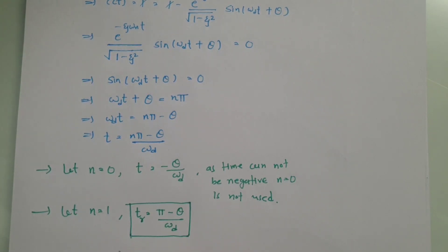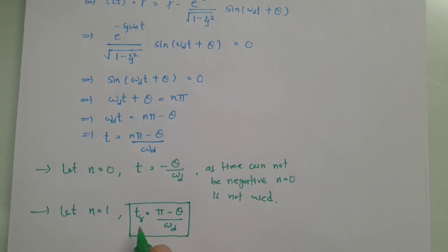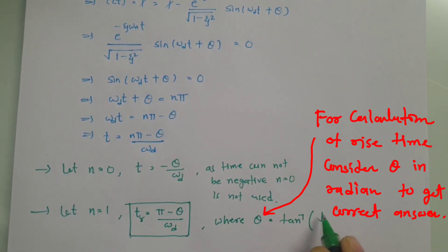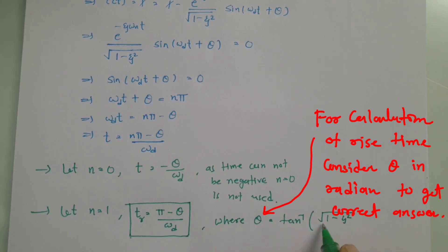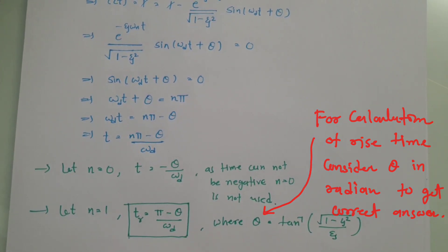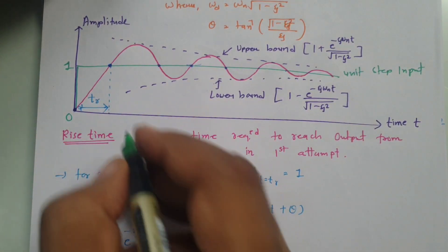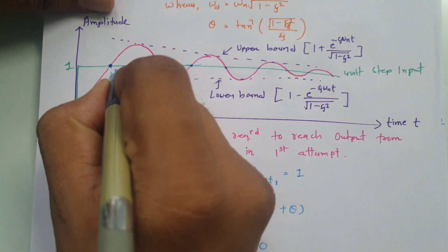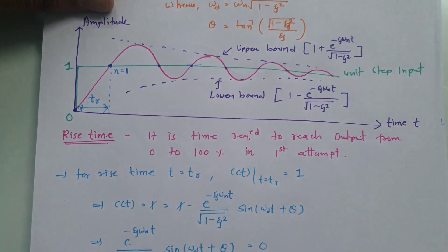This is the rise time because it is the minimum time required for the output to reach from 0 to 100 percent. The rise time is t_r = (π − θ) / ω_d, where θ = tan⁻¹(√(1 − ζ²) / ζ). We can clearly confirm that n = 1 gives the rise time.